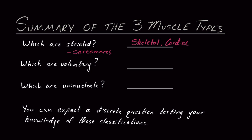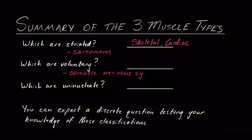Number two, which are going to be voluntary? Which ones do we have control over? That's going to be the same as which are controlled by our somatic nervous system, soma meaning body, so our body's nervous system, as opposed to the autonomic nervous system, which is more on autopilot, which we don't have control over, and that's going to be skeletal muscle. We don't have voluntary control over our cardiac and smooth muscle — as much as it would be cool to pump our own heart on demand.